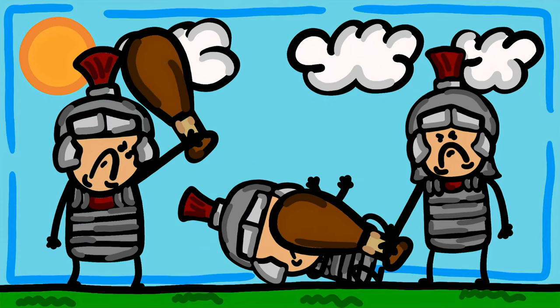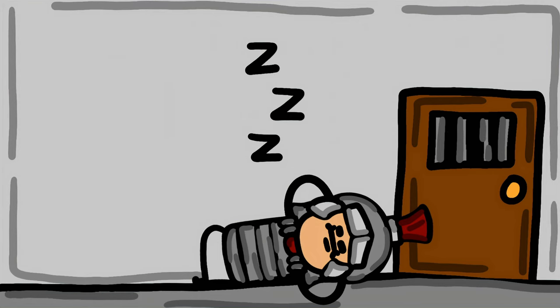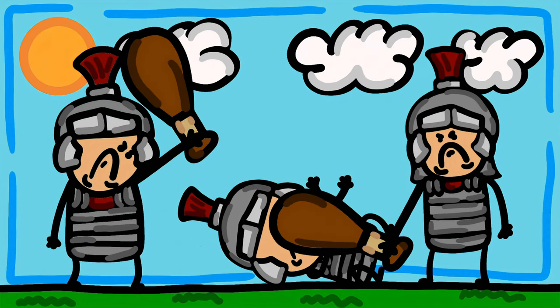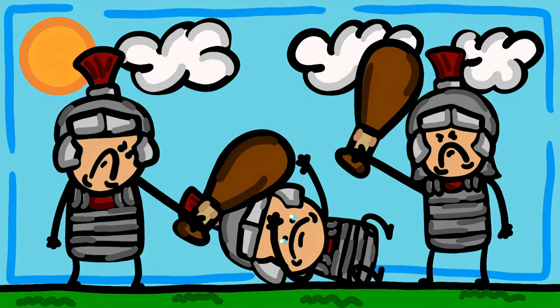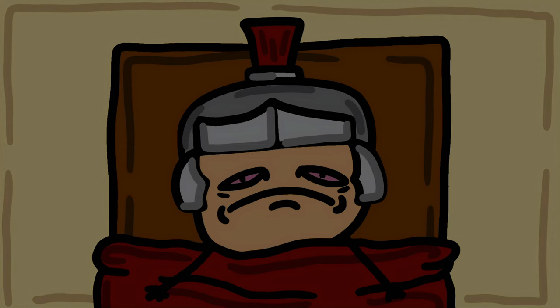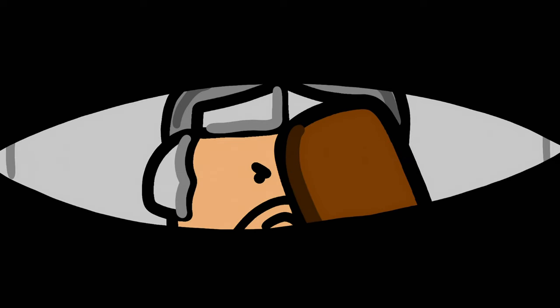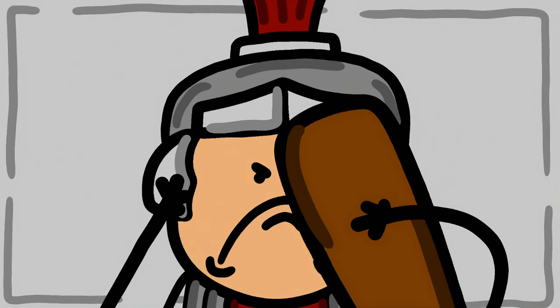Number 6: Fustuarium. One who was found guilty of desertion or sleeping while on guard duty was punished by being beaten to death with clubs by his fellow comrades. Just imagine you're a Roman soldier for a second, and one day you didn't get enough sleep the night before, so you take a little nap, and the next thing you know your best friend is beating the brakes off of you with a club.